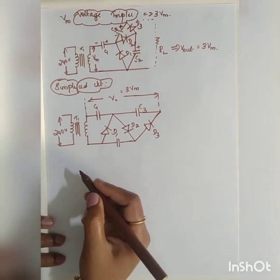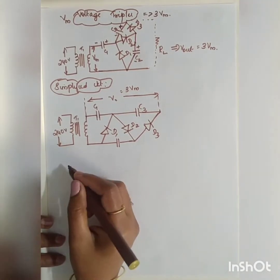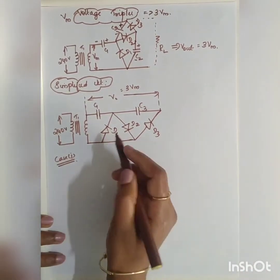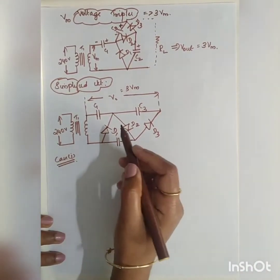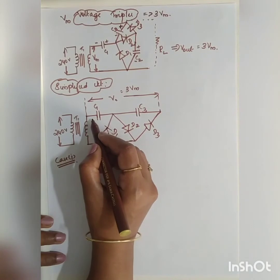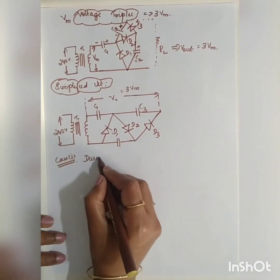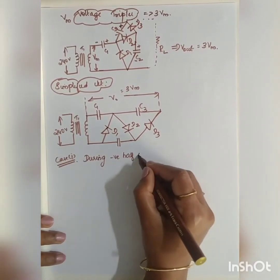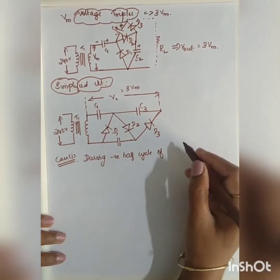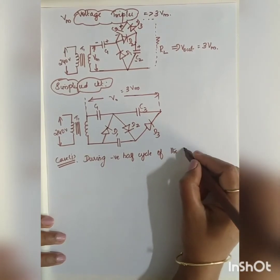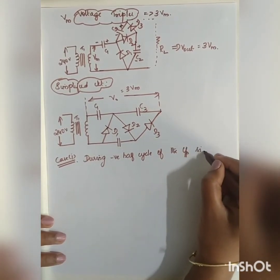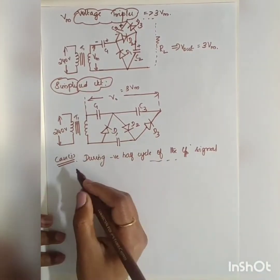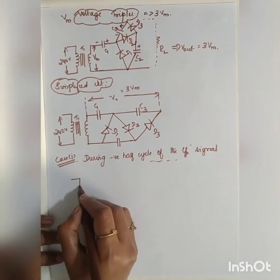Let us go through the working principle of the tripler without the derivation. Case 1 is during the negative half cycle. Since the diodes are oriented assuming a negative start, we begin with the negative half cycle of the secondary of the transformer.